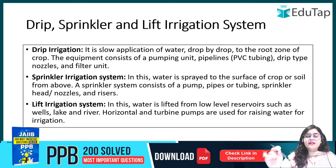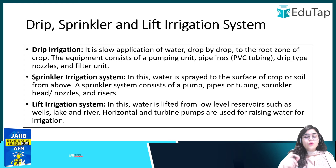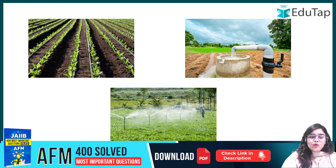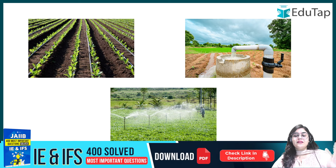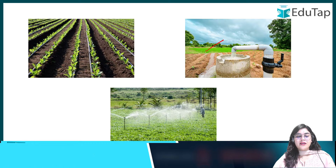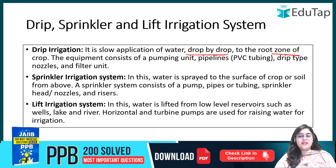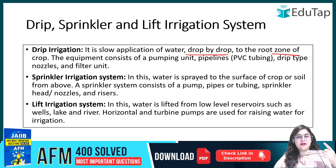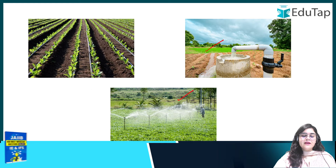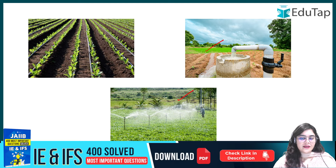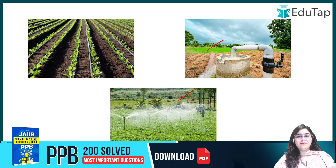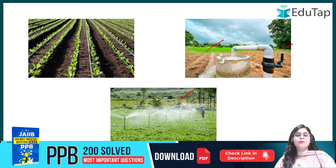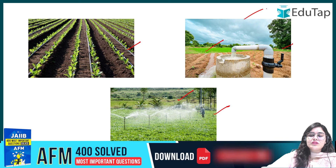Drip irrigation applies water drop by drop directly to the root zone of the plant through small pipes. You don't apply excess water — it goes drop by drop to the root. You need a pumping unit, pipeline, nozzles, and filters. The initial cost is higher, but in the long term it saves water. In sprinkler irrigation, water is sprayed through sprinklers over the field. In lift irrigation, water is pumped from a lower level using turbines and pumps. Flood irrigation fills the entire field — it uses the most water. Drip uses the least, then sprinkler, and lift irrigation uses more than sprinkler.